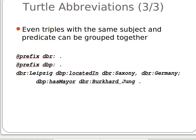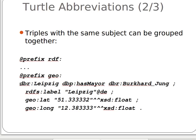Even if we have triples that have the same subject and property, we can group them together. For example, if a property has multiple values — such as a person having several phone numbers or several emails — we can handle that compactly.